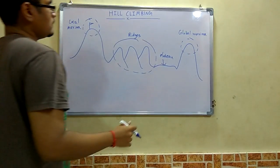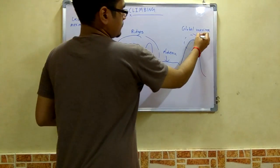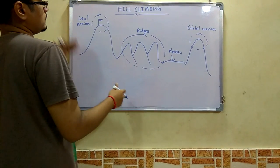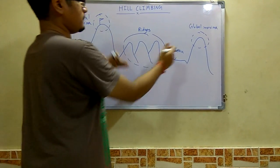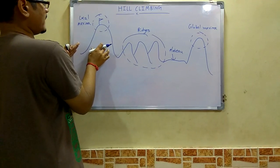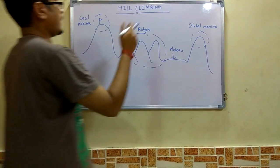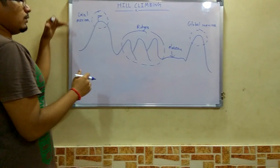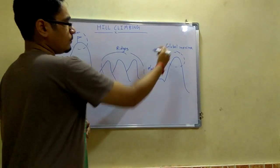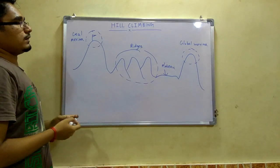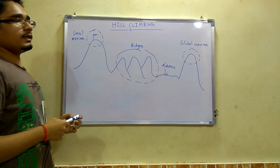Local maxima is the mountain or the top from where you can stand and see all the other cases like local maxima, ridges, and plateau, whereas this local maxima is smaller than the global maxima. There can be multiple local maxima but only one global maxima. So these are the problems in this hill climbing approach.